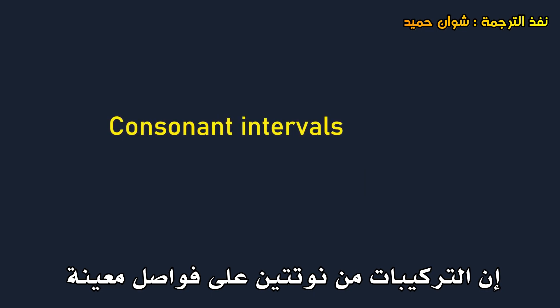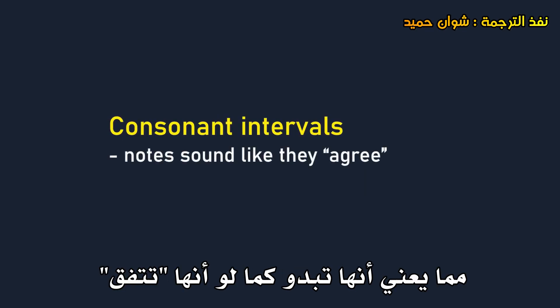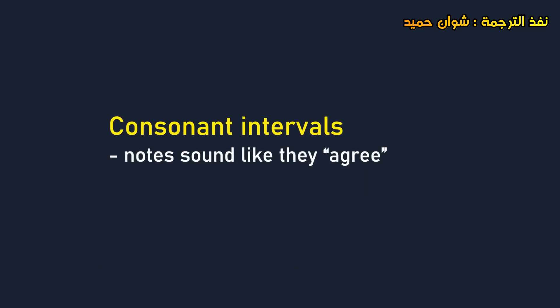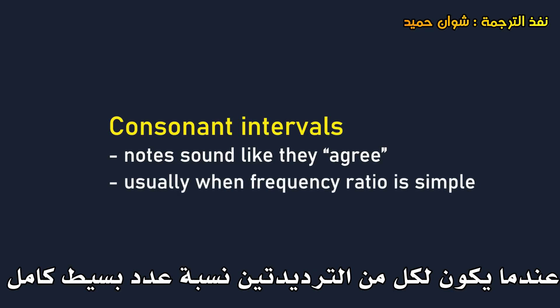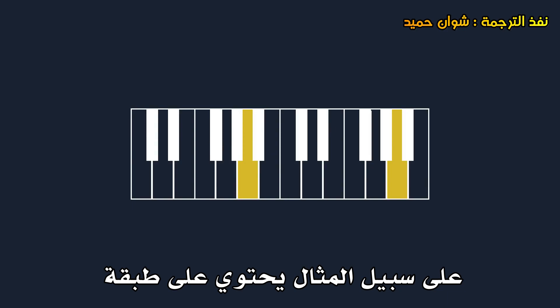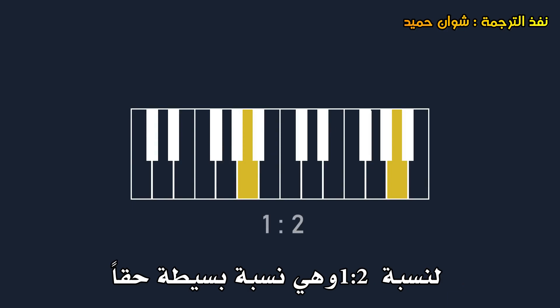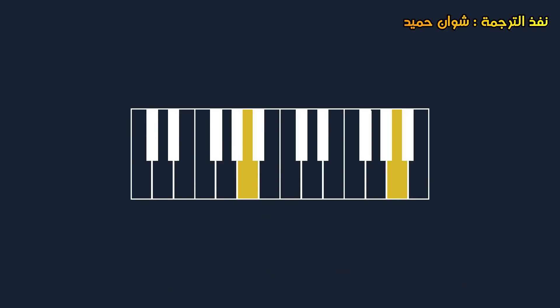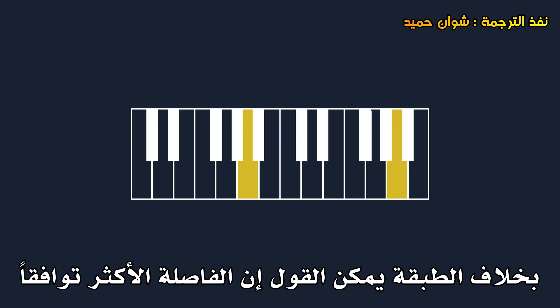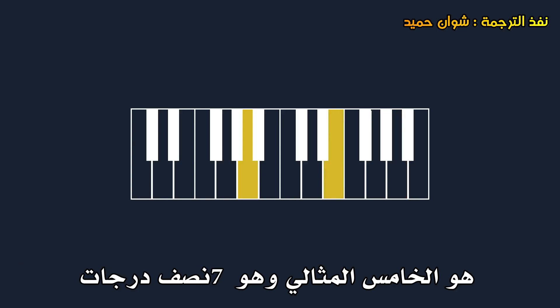Combinations of two notes at certain intervals can sound consonant, which means they sound like they agree with each other, when the two frequencies have a simple whole number ratio. For example, the octave has a ratio of 1 to 2 — a really simple ratio. Other than the octave, the most consonant interval is arguably the perfect fifth, which is 7 semitones.